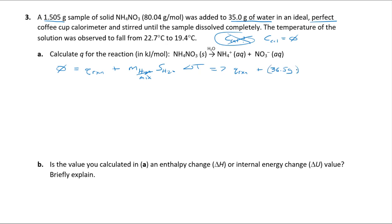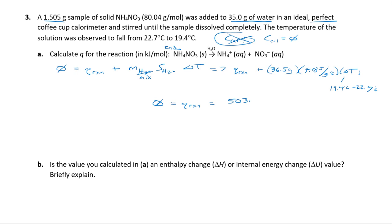We use the specific heat of water for the mixture since we have no other data. The temperature went from 22.7°C down to 19.4°C — a drop, indicating an endothermic reaction. Delta T = 19.4 − 22.7 degrees C. Cranking through the calculation: 0 = q_reaction + (36.5 g)(4.184 J/g·°C)(−3.3°C), giving q_reaction ≈ +503.5 J.